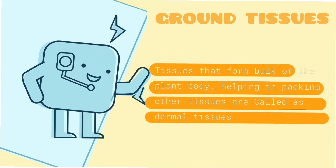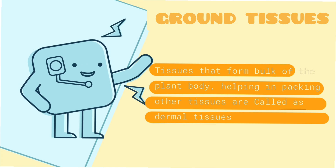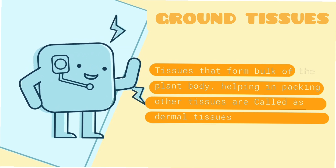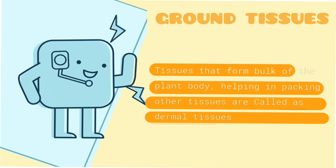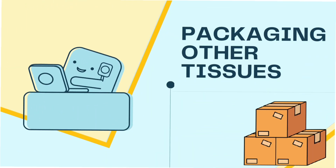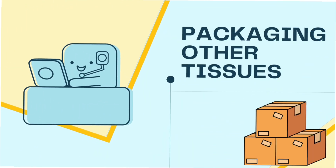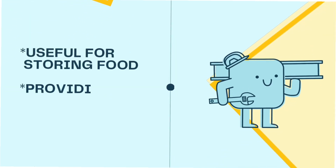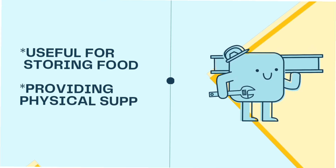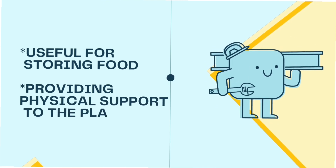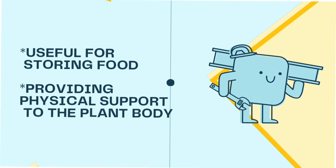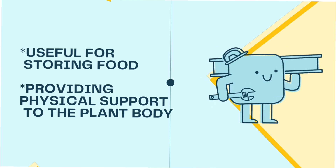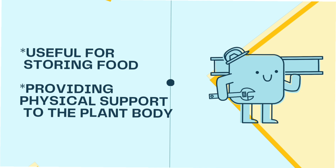Ground tissues. Tissues that form the bulk of the plant body, helping in packing other tissues, are called ground tissues. The ground tissue is used for storing food and providing physical support to the plant body. This ground tissue will be packed with other tissues, and food will be stored as physical support to the plant body.